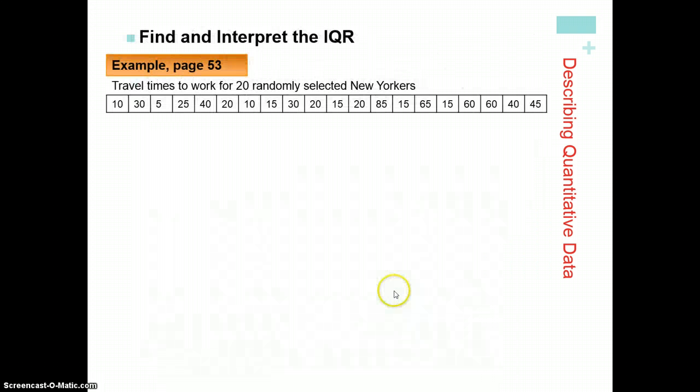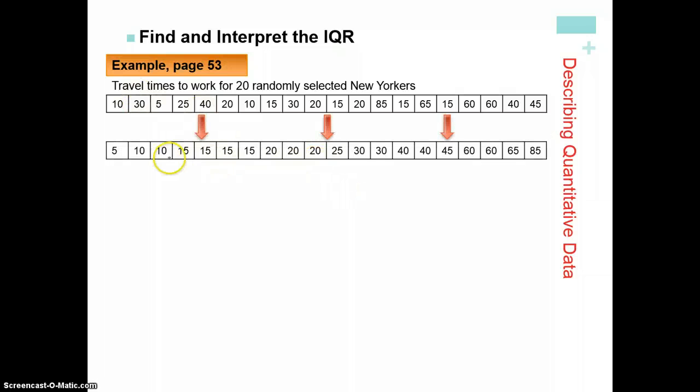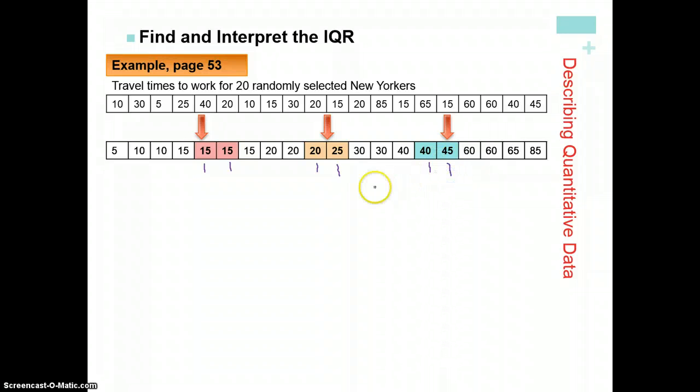So let's do an example where we have to do this. Same example, page 53. I have ordered them in chronological order this time and given arrows kind of indicating where we're looking for and highlighted. This is the 5th, this is the 6th, this is the 10th, this is the 11th, this is the 15th, this is the 16th position. You'll notice this is the Q1, this is Q2 or median, and Q3.